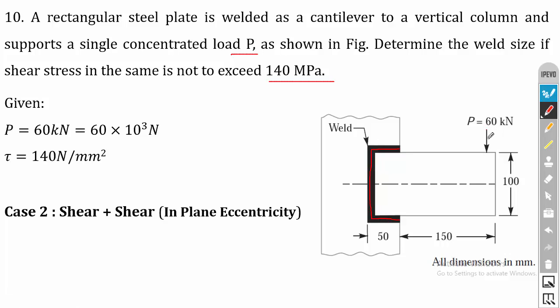This comes under case 2 in-plane eccentricity. In in-plane eccentricity the primary stress is shear stress and the secondary stress is also shear stress. The welding and the load are acting on the same plane — that is how it comes under in-plane eccentricity. The load acting and the shear stress of the weld region are given. We have to find out the size of the weld H.